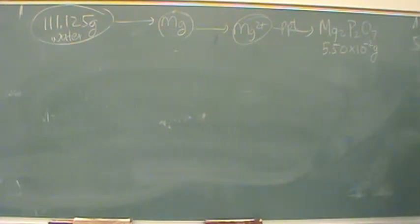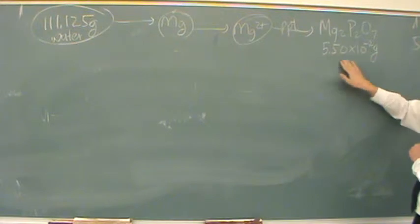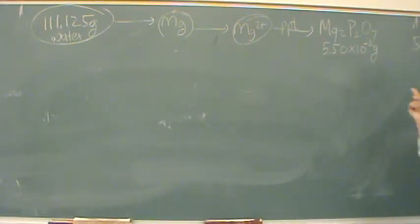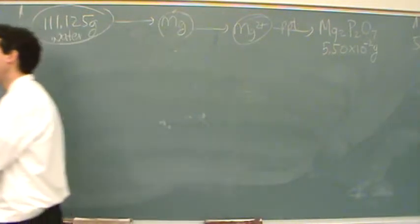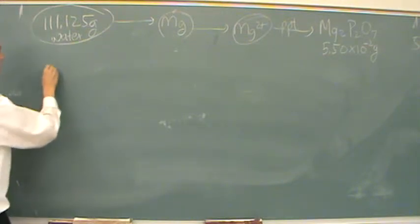And then they do a fancy experiment to precipitate it out, and you get this much mass. Is this the mass of the whole sample? Let's see. Yeah. So that funny-looking magnesium structure there weighs that much. And we want to know how much magnesium is in the sample in very specific units called parts per million.